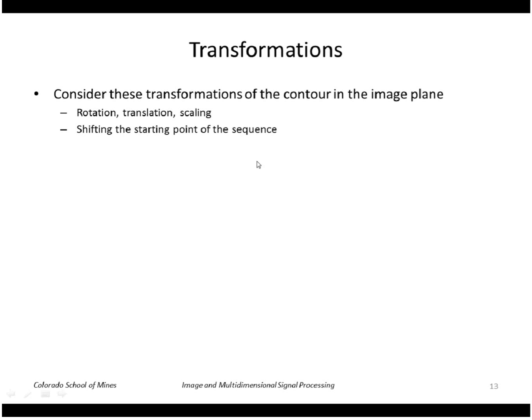We're going to look at rotation, translation, scaling. We also have to consider the starting point of the sequence, the first point that we choose along the border, because that will change the Fourier descriptors.